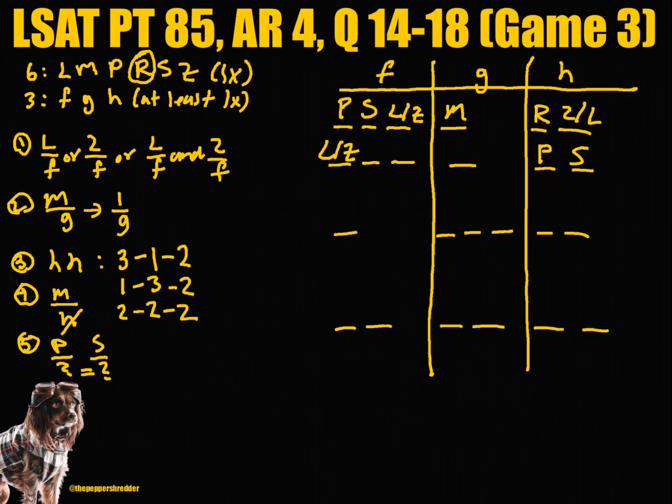In the third instance, either L or Z must occupy the one spot for F. Because rule 4 tells us that M cannot be grouped with H, M must be grouped with G. However, this would violate rule 2. Therefore, this numerical distribution is impossible under the given facts.